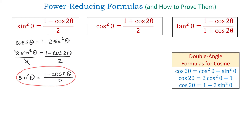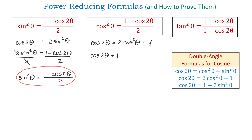This is the power-reducing formula for sine. To prove the second formula, we will use the second form of the double-angle formula for cosine: cosine of 2 theta equals 2 cosine squared of theta minus 1. To obtain the formula, we solve for cosine squared of theta by moving negative 1 to the left, giving cosine of 2 theta plus 1 equals 2 cosine squared of theta. Dividing both sides by 2, we get cosine squared of theta equals cosine of 2 theta plus 1 over 2.